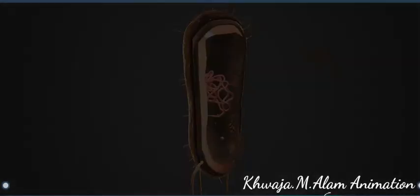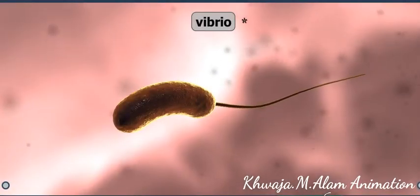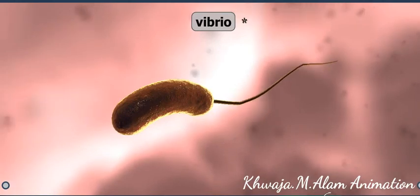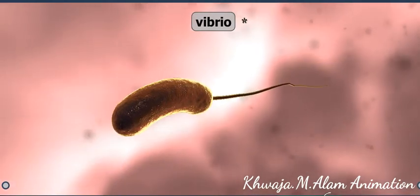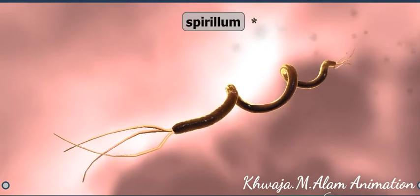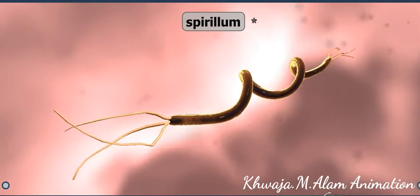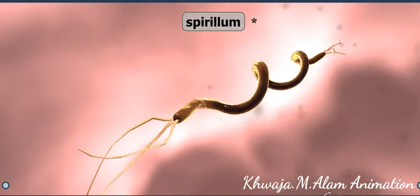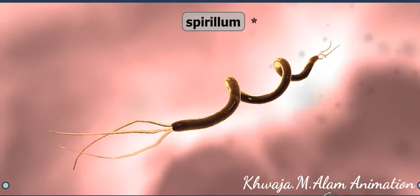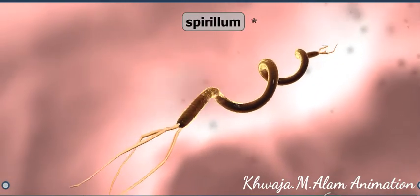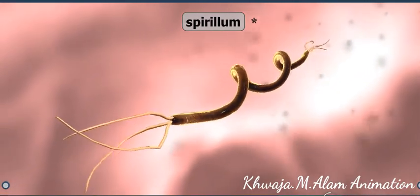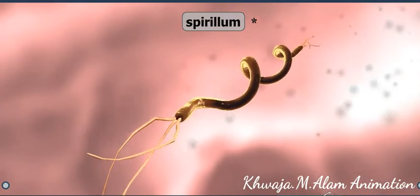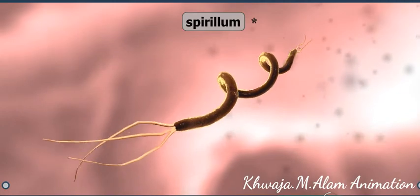Some bacteria are capable of active locomotion through the use of their flagella. Bacteria have an exceptional ability to adapt and reproduce, which is why they are extremely widespread. They are capable of both sexual and asexual reproduction. If they reproduce through binary fission, which is a form of asexual reproduction, it results in a large number of individual bacteria cells.